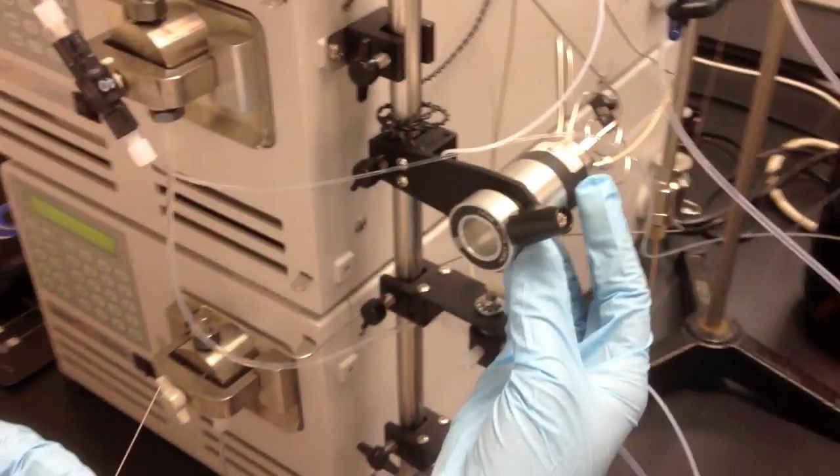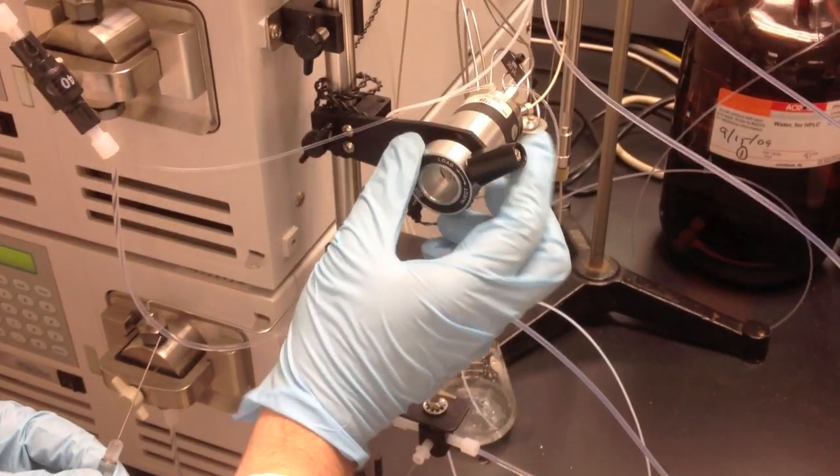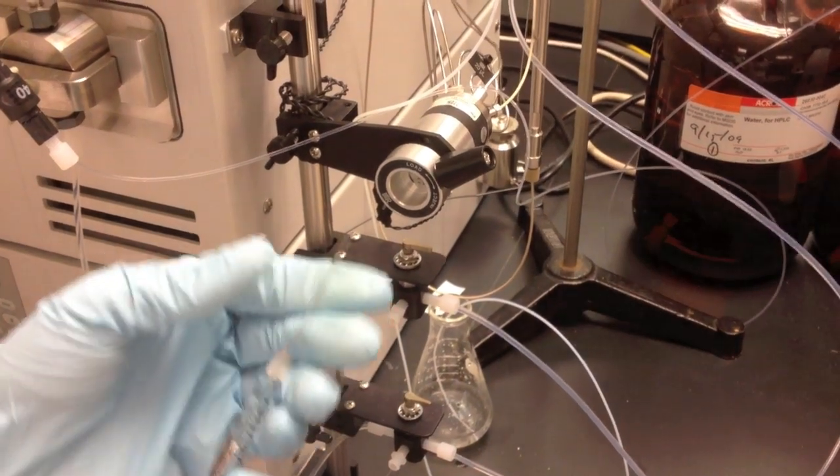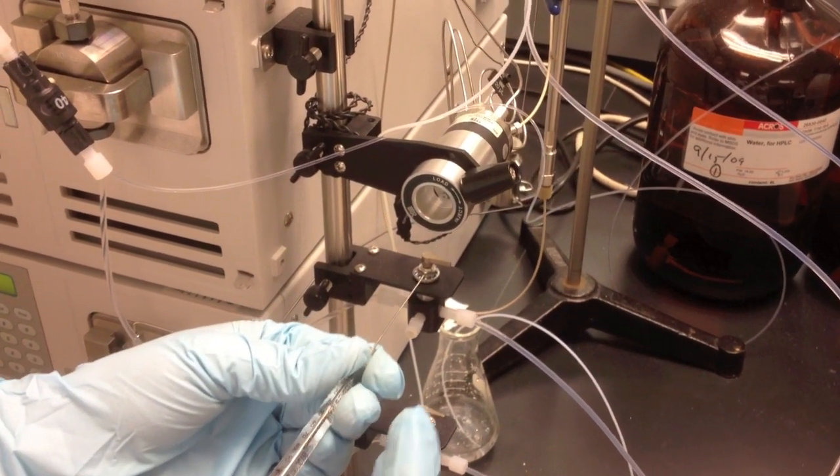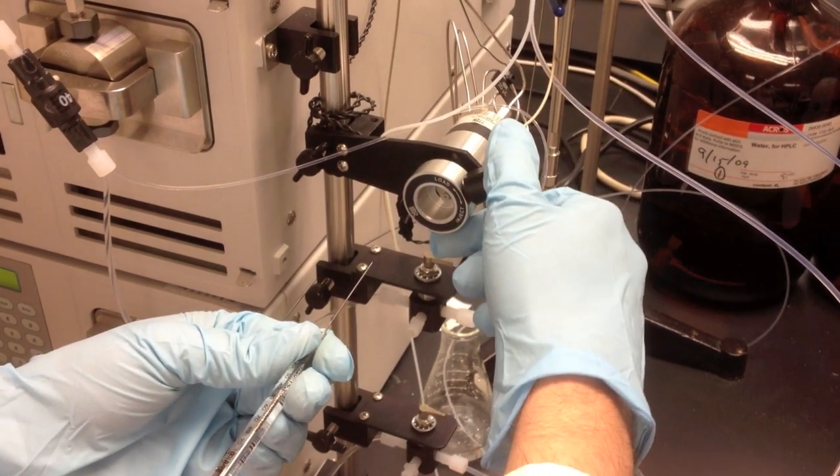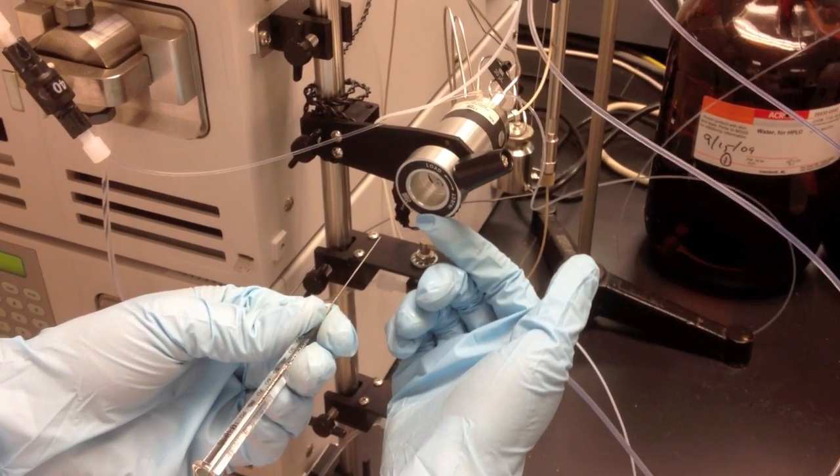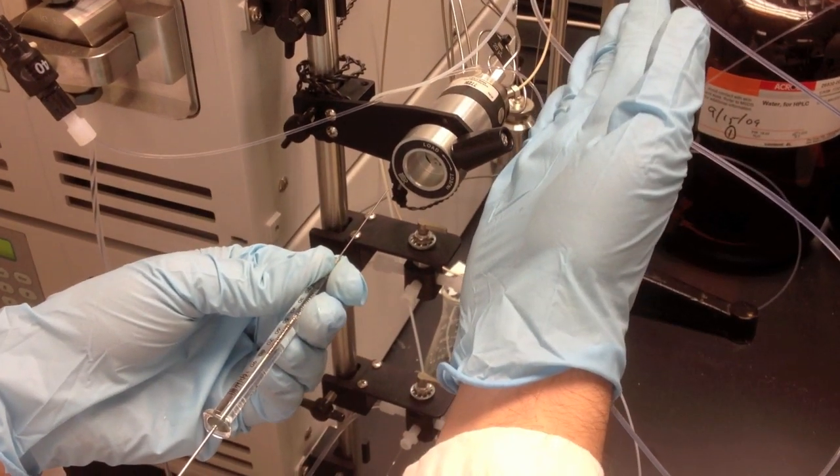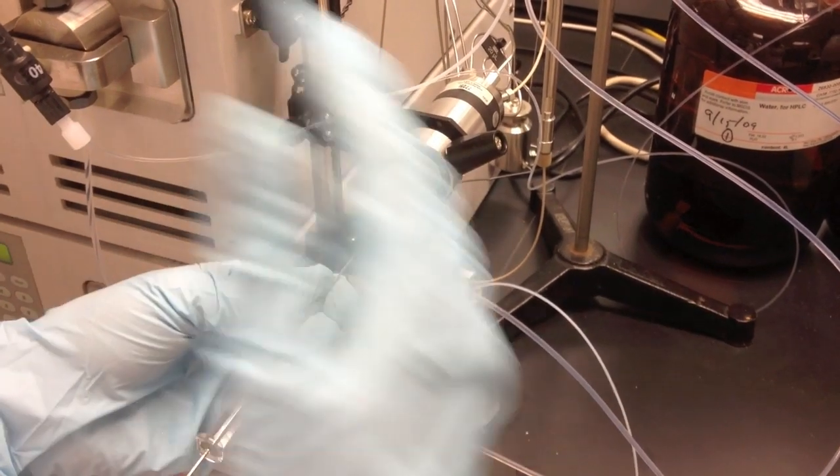This is the injection port. Make sure this knob is in the up position. So we're going to insert, shoot our sample on, and we're going to drop down this knob and count to five. Once that's done, we're going to push the knob back up. And that's all the injection. The rest is automated.